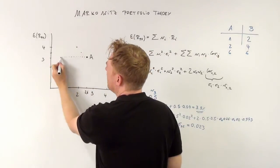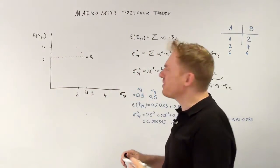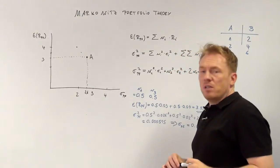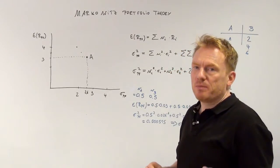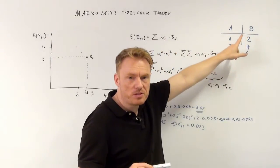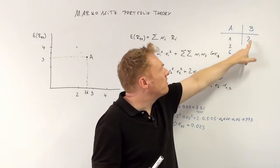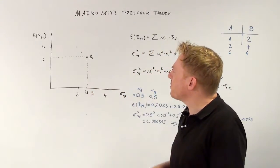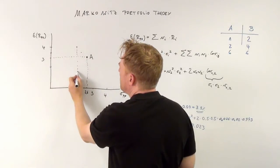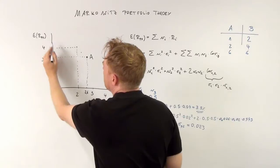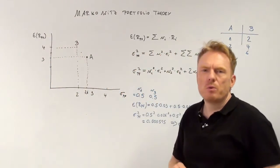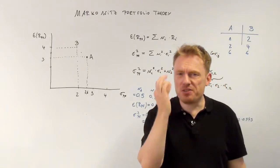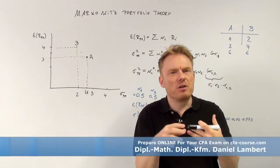Share A has an expected return of 3% and a standard deviation of 2.6%. Now for share B: the expected return is (2 + 4 + 6) / 3 = 4%, and the standard deviation is 2%. Now we want to compute different expected returns and standard deviations for different portfolio combinations.